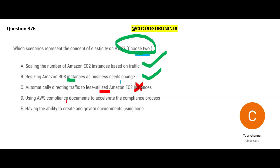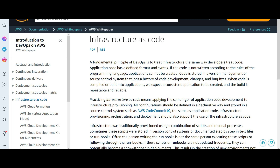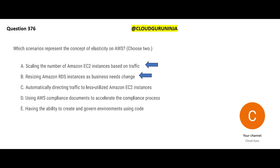Option D is all about compliance — it has nothing to do with elasticity. If you are working for a bank in India there are RBI guidelines you must stick to, but being compliant is not elasticity. Option E is about having the ability to create and govern environments using code — that is Infrastructure as Code (IaC). You can write code with configurations, run it, and EC2 instances get created and configured. Run that code ten times and the same number of EC2 instances with exactly the same configuration get created without human error. Our final two answers for elasticity are options A and B.